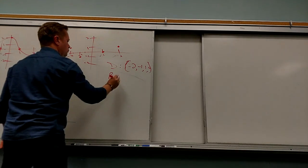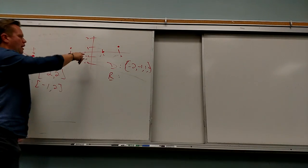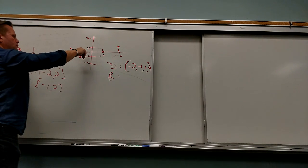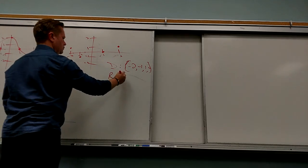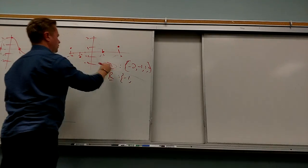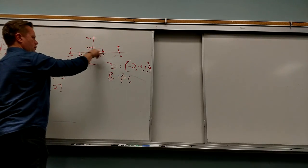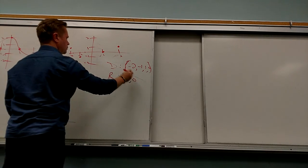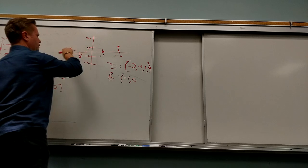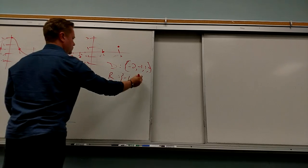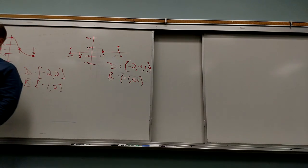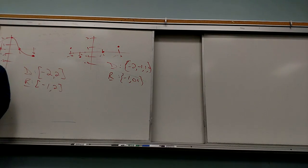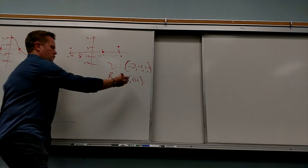So the range — what are the only Y-values? Negative 1, zero, and one. And if one appears twice, you just put it once. Good job.